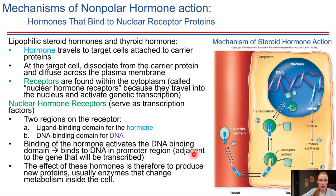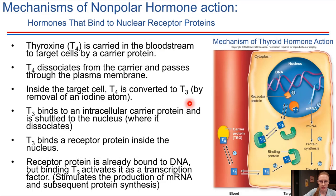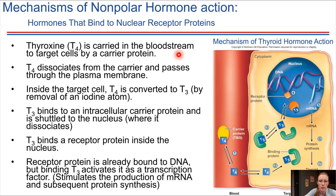Another category of lipophilic hormones are thyroid hormones, produced by the thyroid gland. Thyroxine is one thyroid hormone — it has four iodines, so it's sometimes abbreviated T4. T4 likewise starts off circulating in the bloodstream. Once it makes it to its target cell, it will dissociate from its carrier protein and cross over the plasma membrane, just as we saw in the previous example. Inside of the cell, one of those iodines gets removed, so T4 gets converted to T3 — now it just has three iodines.